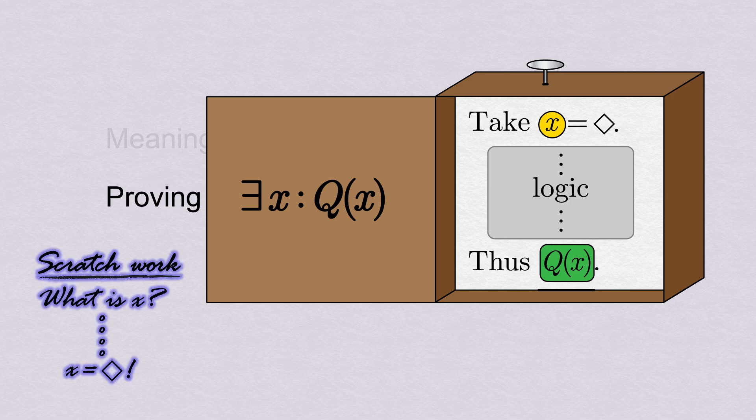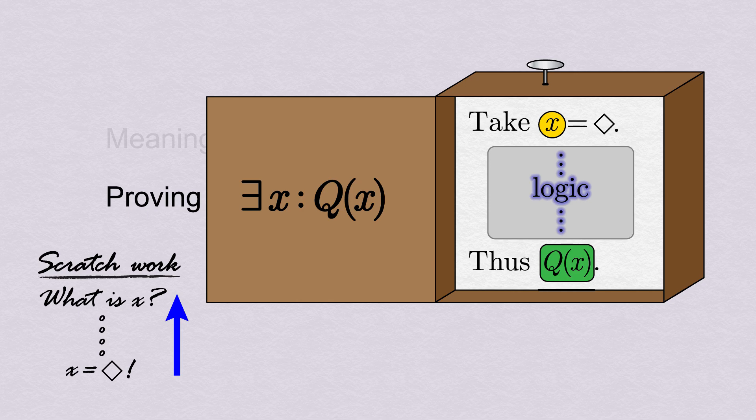The good news is that whatever work we did to find our x, which need not even be valid, can often be read in reverse as a script for the steps in our justification of Q(x), which must be logically sound. Our box spits out this verified statement, along with our chosen value of x.